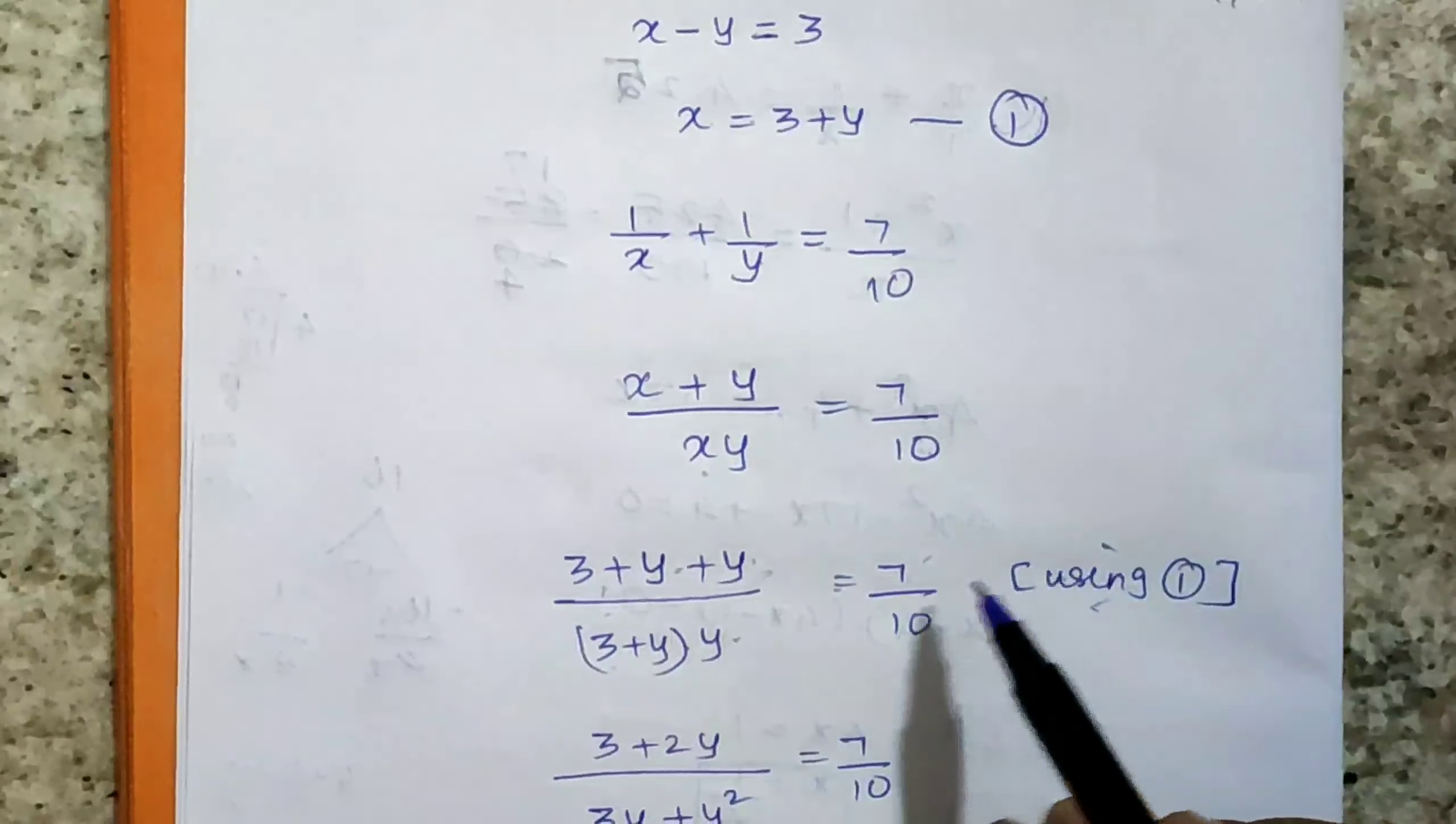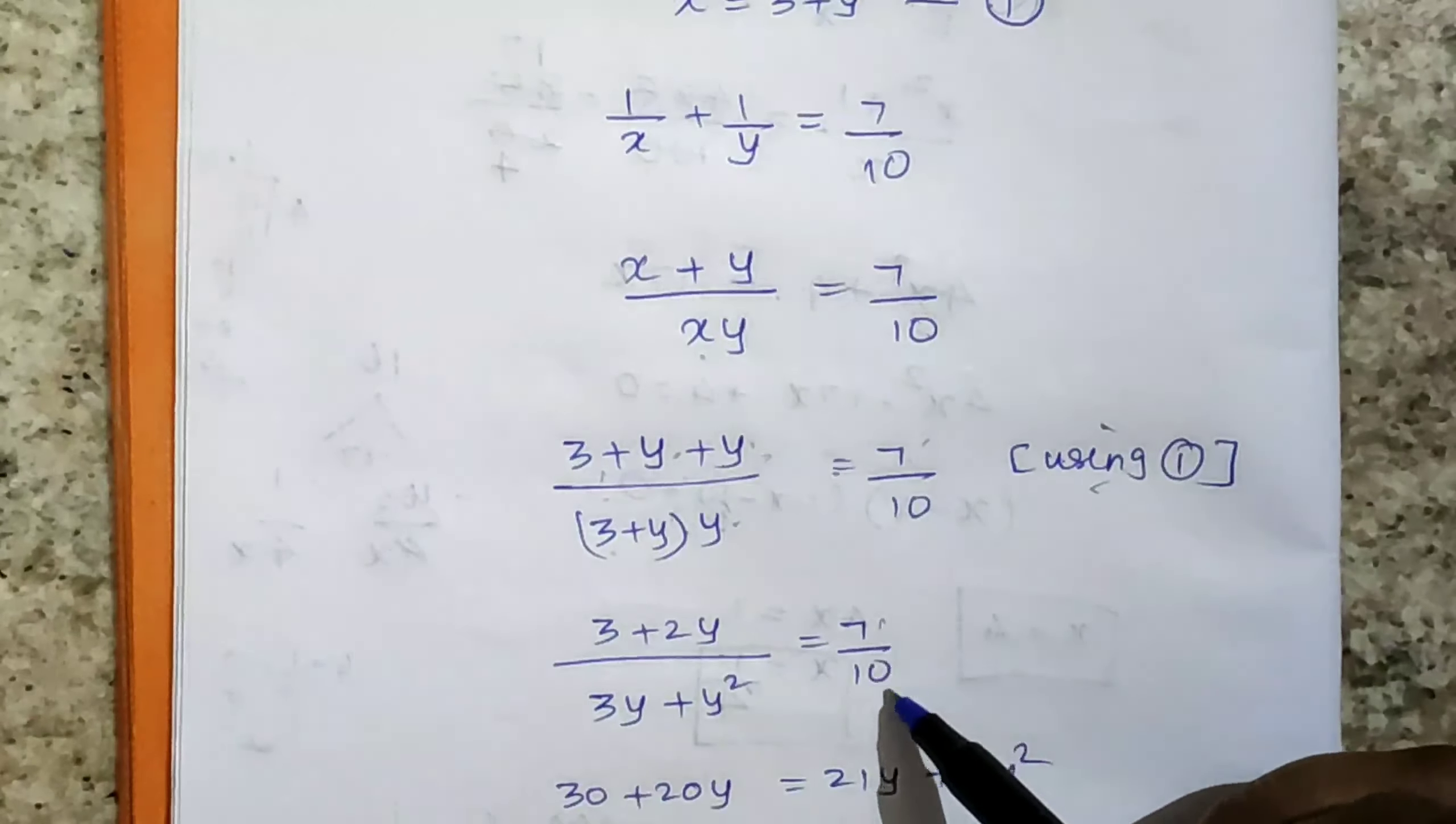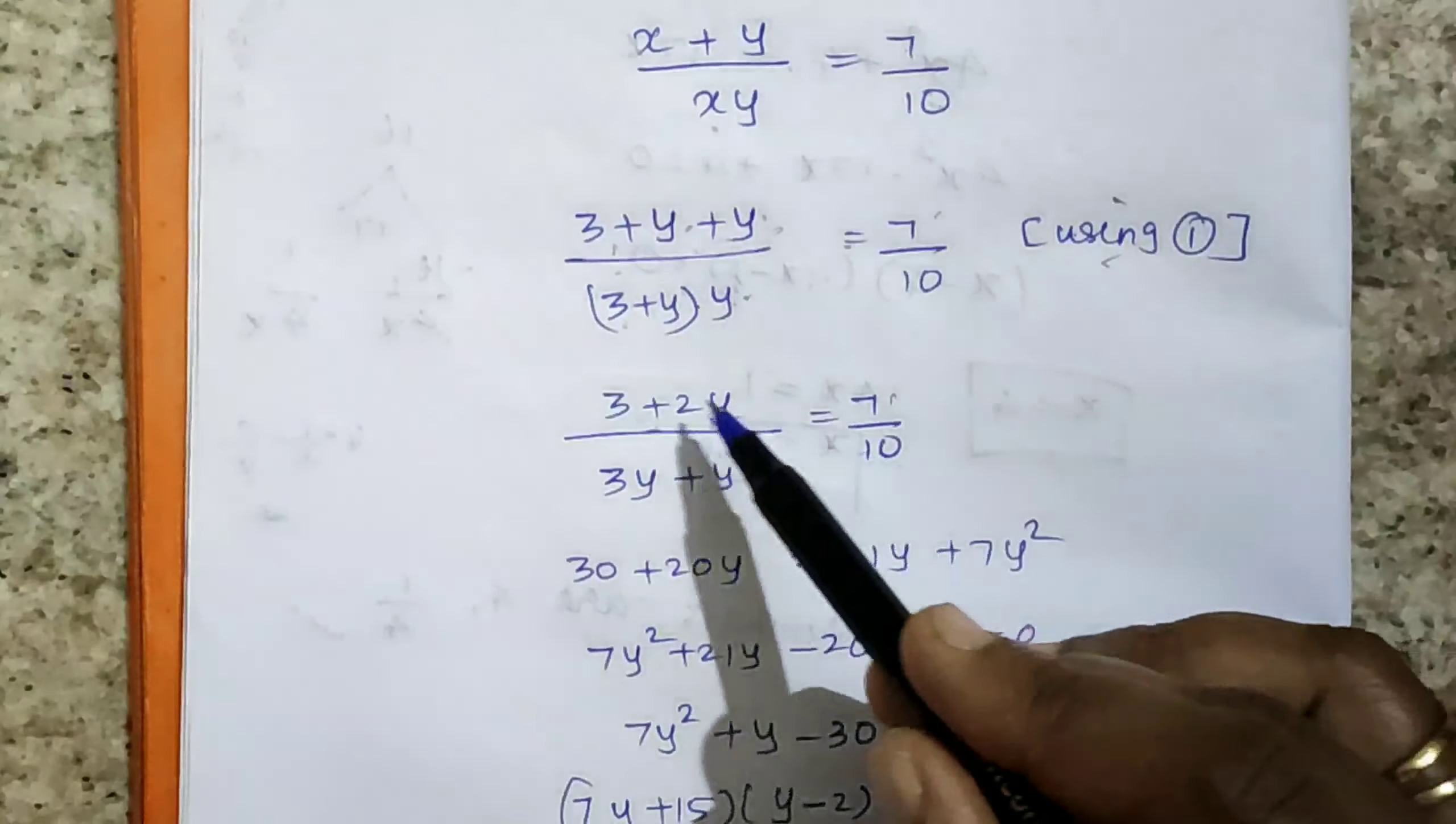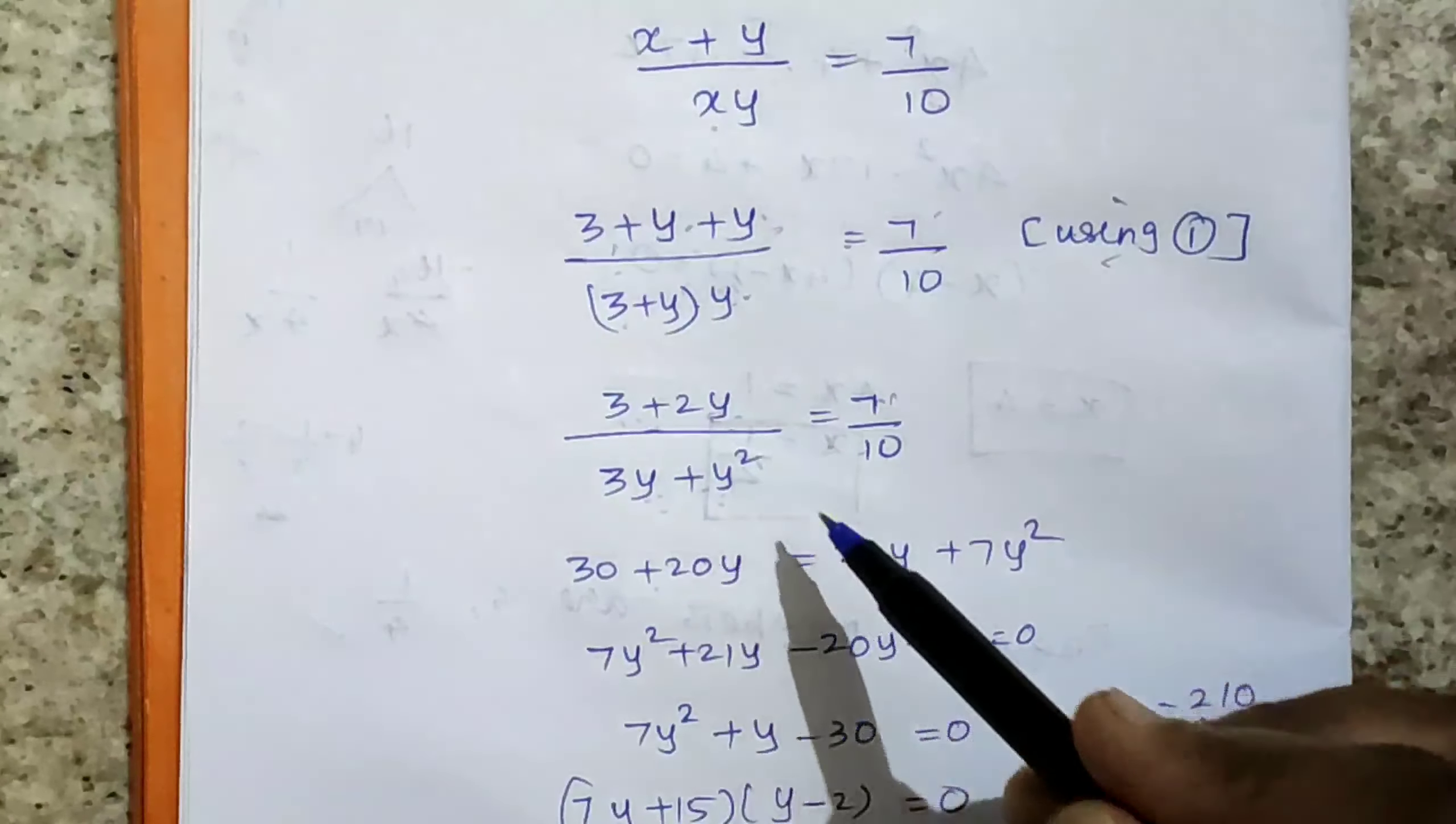Using equation 1, y plus y means 2y. In the denominator multiply y inside, so 3y plus y squared equals 7/10. Now cross multiply these two, so 10 times both terms: 10 times 3 is 30 plus 20y equals, multiply by 7 with these two terms, 21y plus 7y squared.